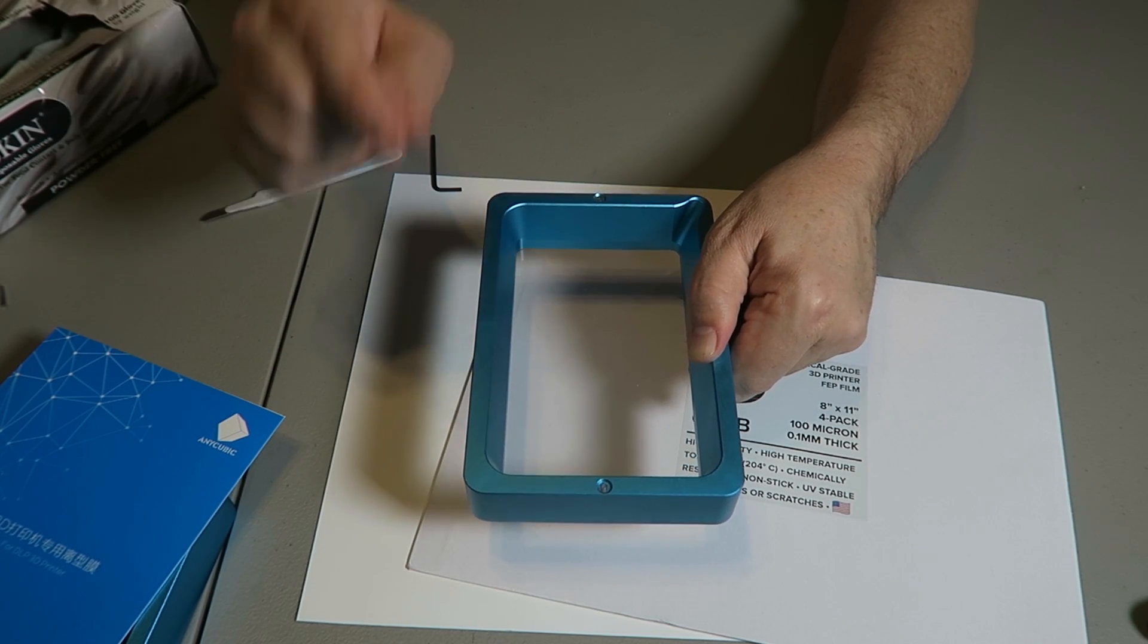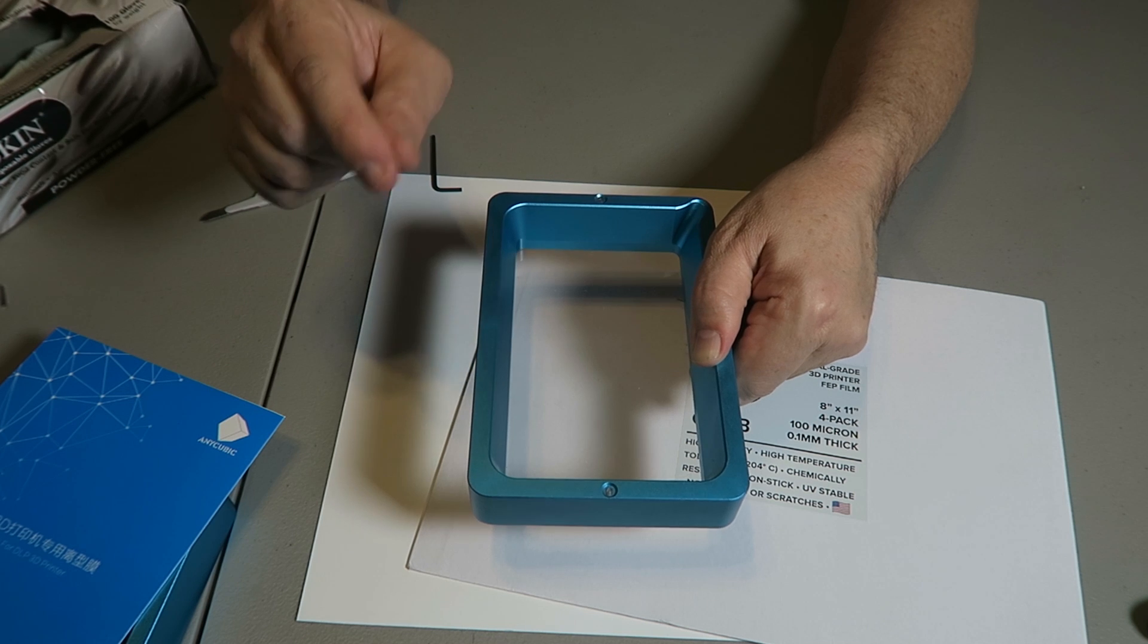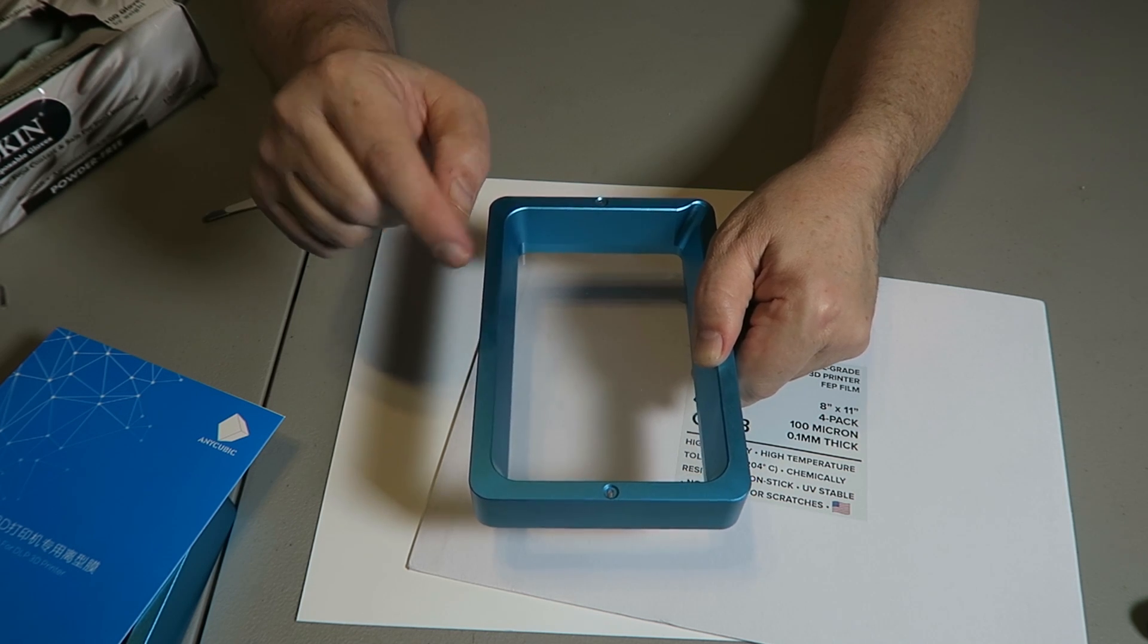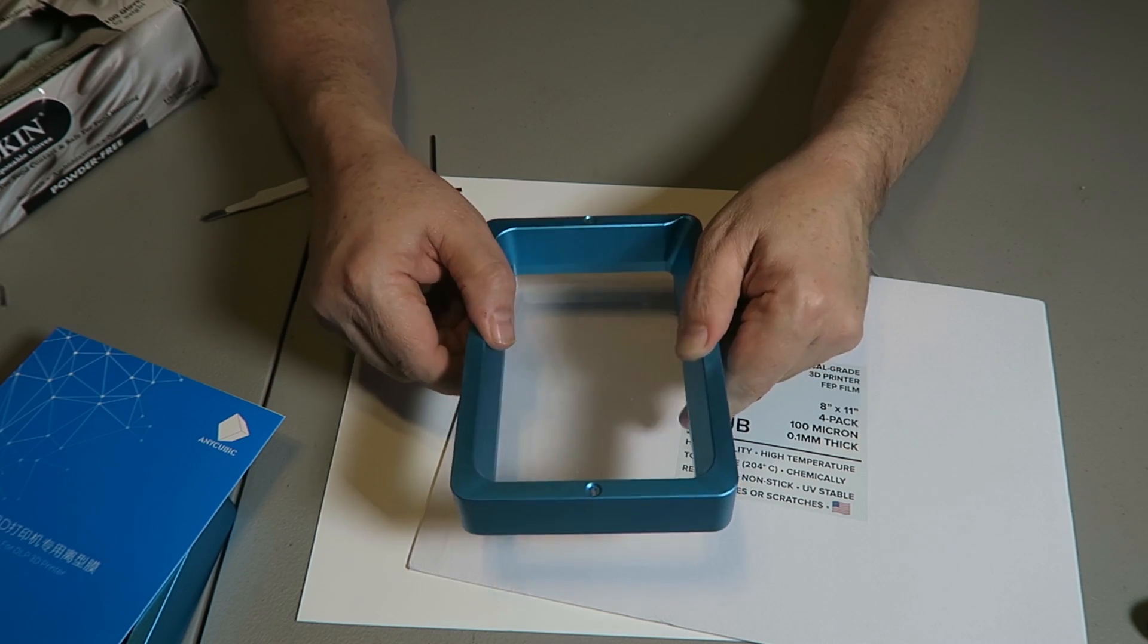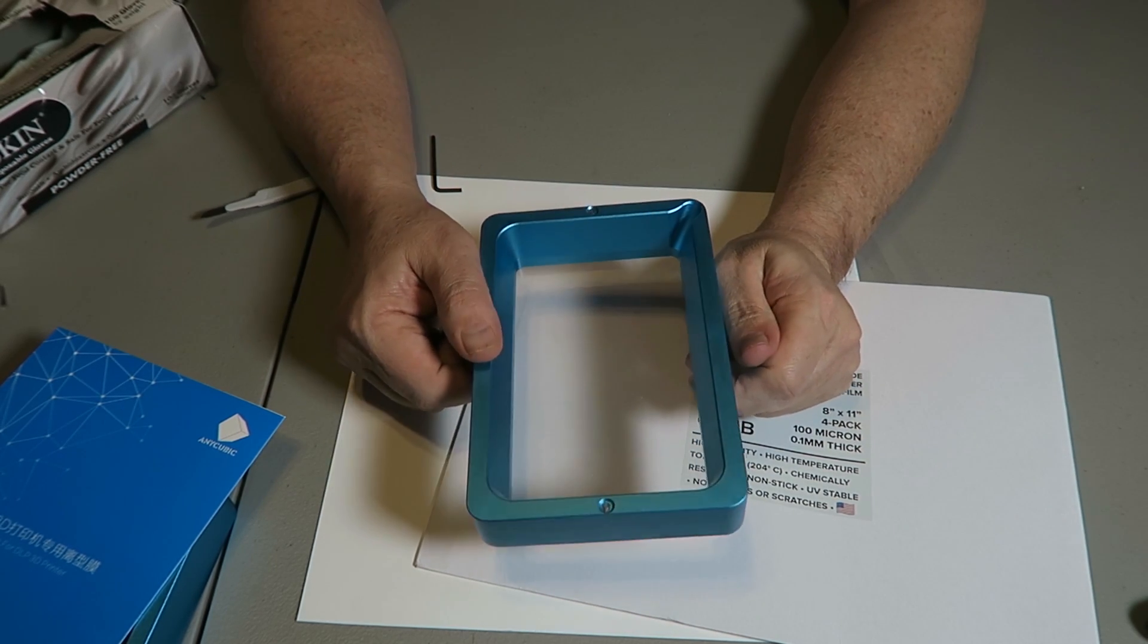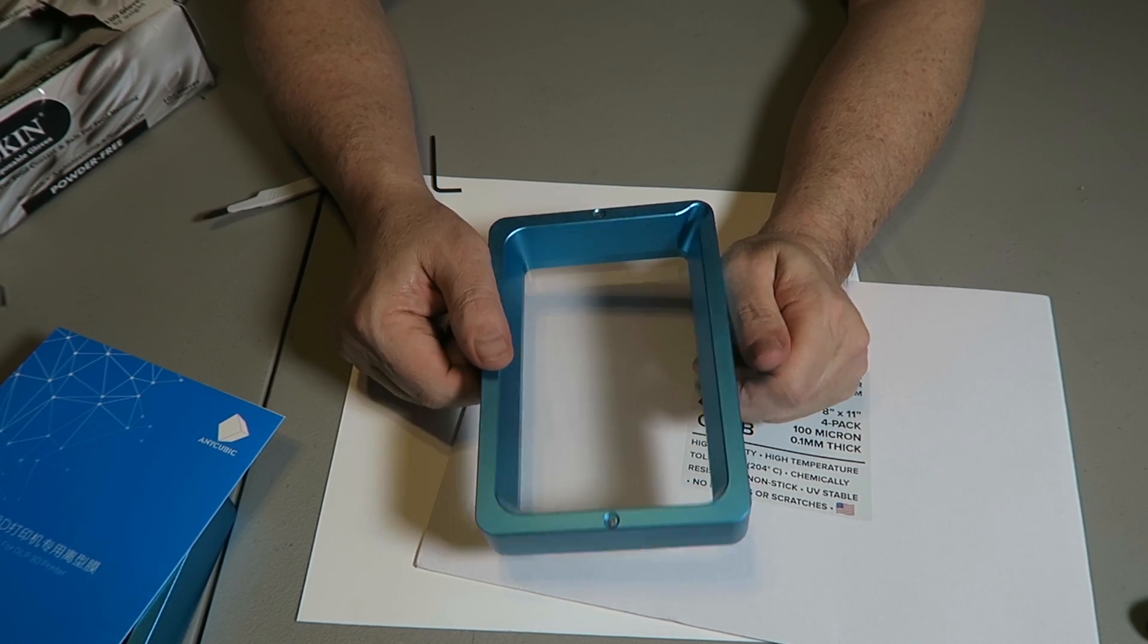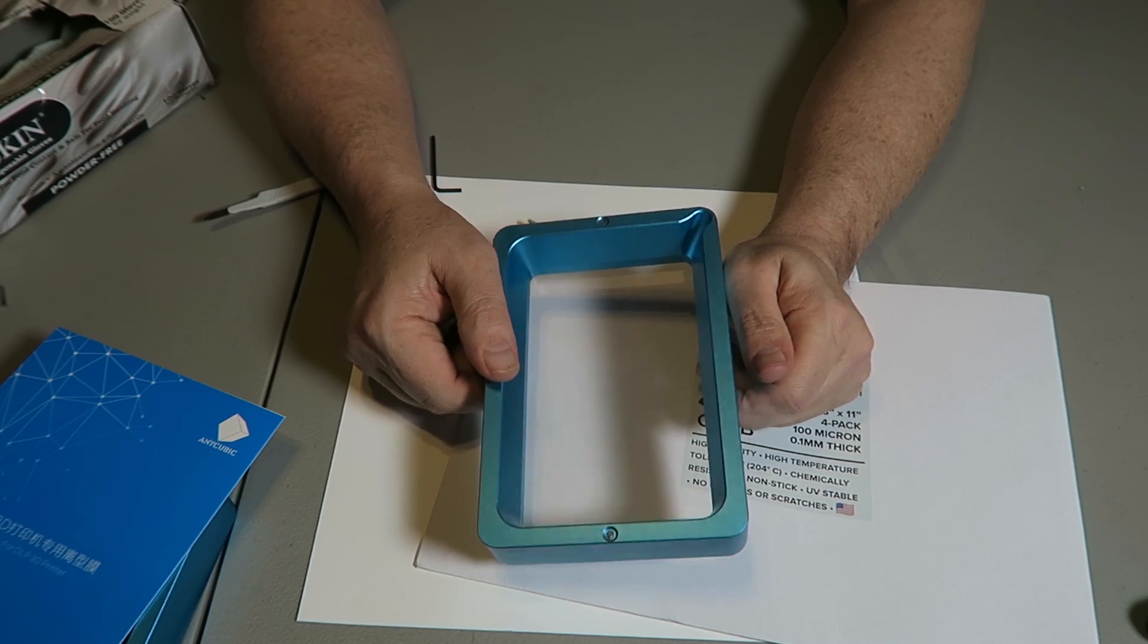You want to make sure that your build plate is flat and it's tuned, because if not and stuff sticks to this and you start removing it, you might have issues. But just remember, any time you change out the FEP, you need to flatten and re-level your build plate.